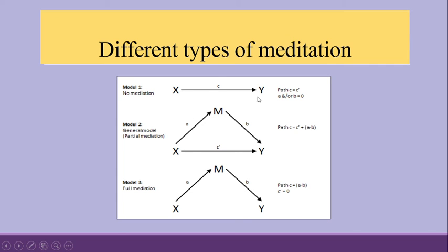If X1 is affecting Y directly and there is no mediation, we say there is no mediation present. It may also be possible that X is affecting Y directly and also through the mediator — in this case we say partial mediation exists, because both the direct and indirect effects are significant. It may also be possible that X is not affecting Y directly but only through the mediator, which is known as full mediation.